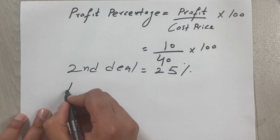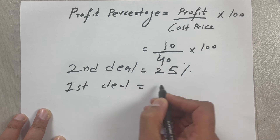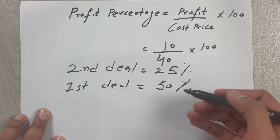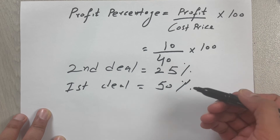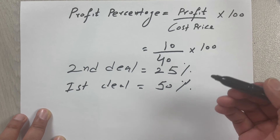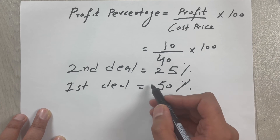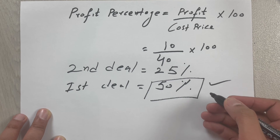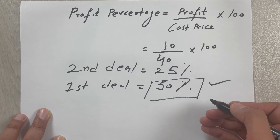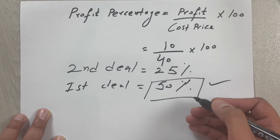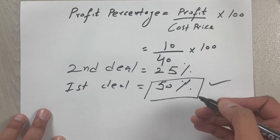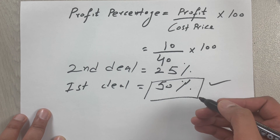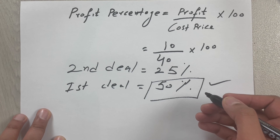The first deal profit was 50 percent, so we know from this calculation that in the first deal we make the bigger profit. As you can see, the cost price of the shirt was 20, we sold it for 30, the profit was 10 — but in the first deal we make a bigger profit. So this is how you can calculate the profit percentage. I hope you liked and enjoyed the video, please do subscribe to my channel, thank you very much.